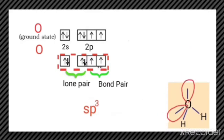Why does water have a bent shape? Because of lone pair–lone pair repulsion, which is greater than lone pair–bond pair repulsion, which is greater than bond pair–bond pair repulsion. So the angle is not 109.5° — it is reduced to 104.5°. That is the sp3 hybridization in water.